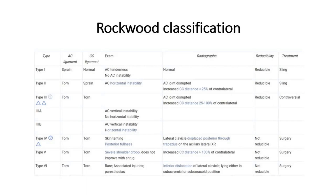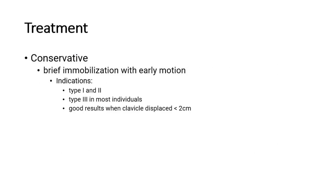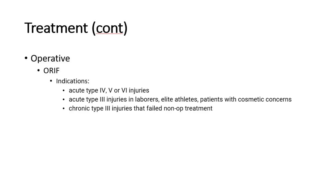Types 4 to 6 are more serious conditions requiring surgery. For conservative treatment in types 1 and 2, brief immobilization with early motion can be done. Operative treatment is ORIF; indications are types 4 to 6, acute type 3 injuries in laborers, elite athletes, or patients with cosmetic concerns, and chronic type 3 injuries that failed conservative management.